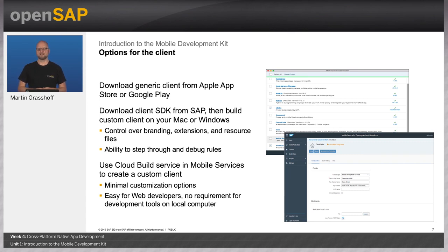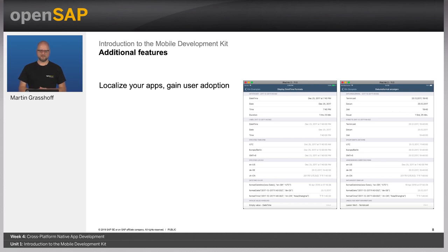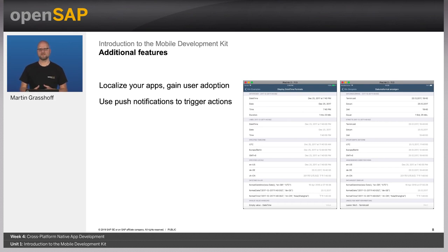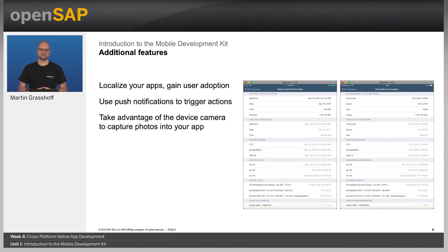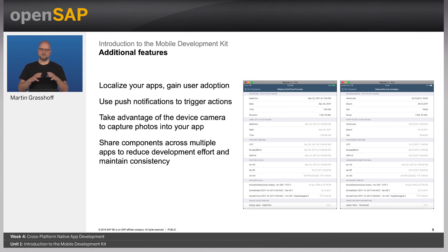With the Cloud Build Service, the compilation of the client is handled for you, so you just need to download your client from the Mobile Services Cockpit. You can also localize your applications to support multiple languages. MDK supports push notifications — you can receive push notifications to trigger actions in your applications. You can take advantage of the built-in camera and use barcode scanning features. In Mobile Development Kit, you can build reusable app artifacts shared across applications — for example, a screen for presenting business partner information can be reused in multiple applications.